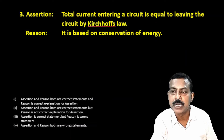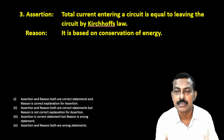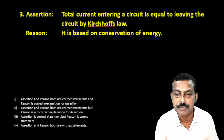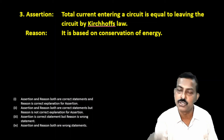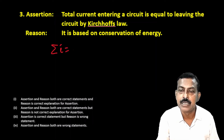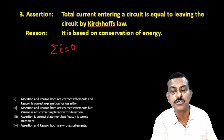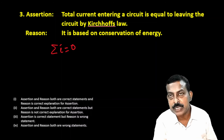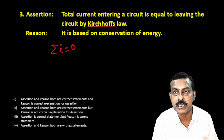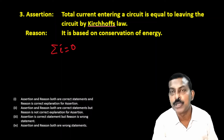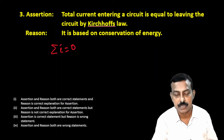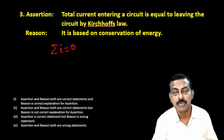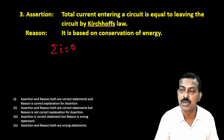Next question. Assertion: total current entering a circuit is equal to current leaving the circuit by Kirchhoff's law. Reason: it is based on conservation of energy. The assertion is correct — Kirchhoff's point rule states that the algebraic sum of currents meeting at a point is zero, meaning total incoming current equals total outgoing current.